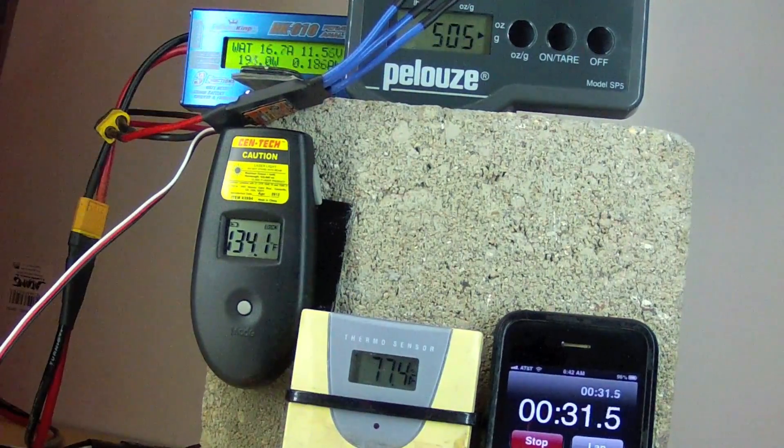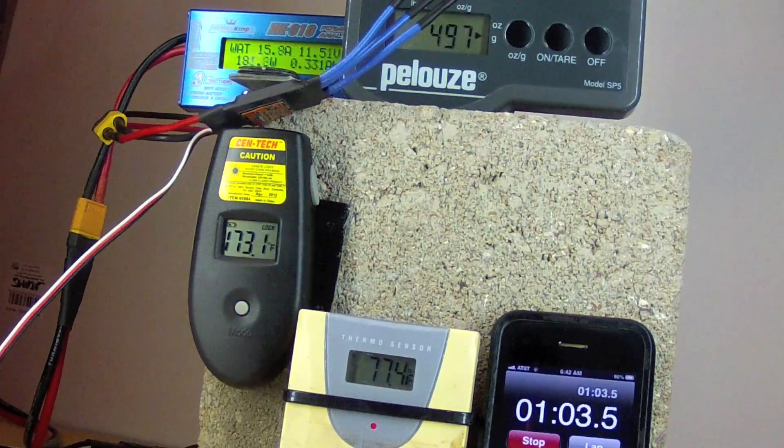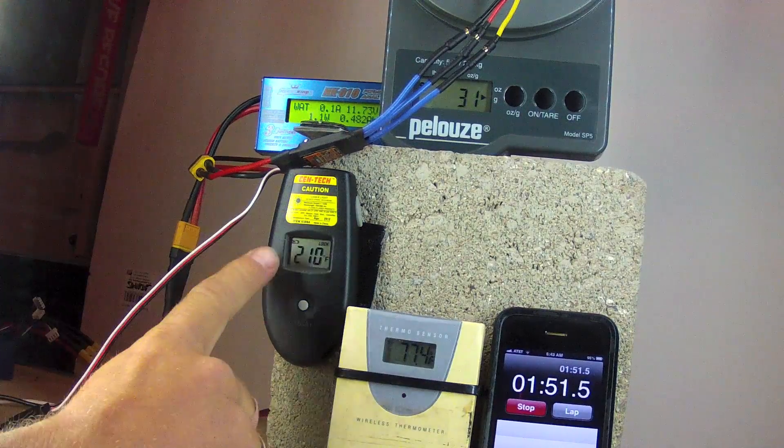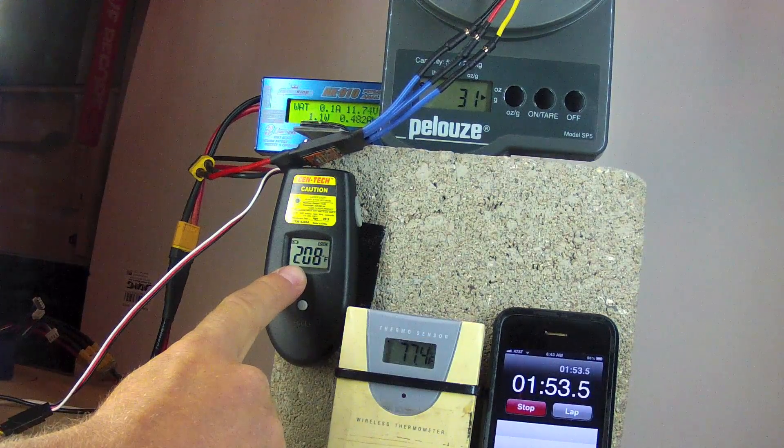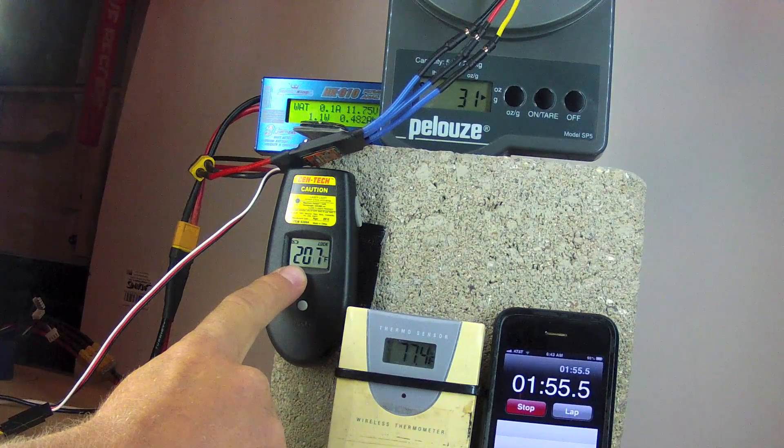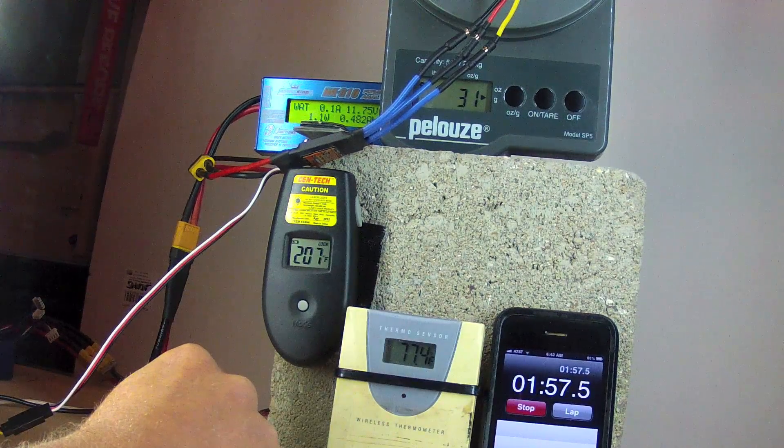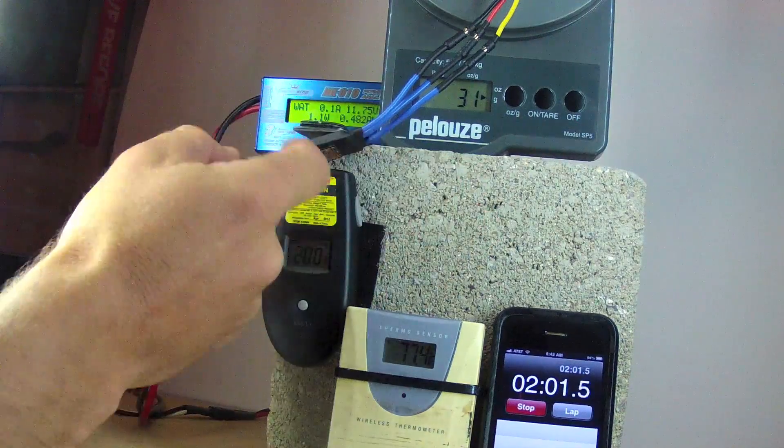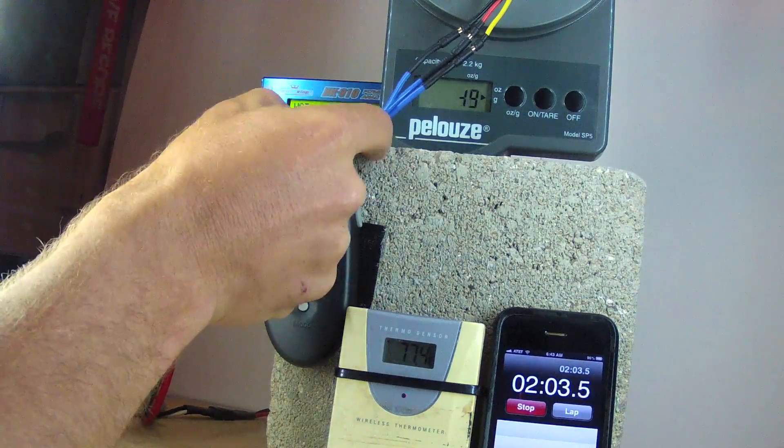Coming at about 15 amps this ESC heats up pretty quickly though. Note there's absolutely no cooling air. So I went ahead and stopped the test at 200 degrees Fahrenheit. Nearly hot enough to boil water. It was about 130 seconds. There was a little bit of wattage drop off as well. And this as you can imagine is extremely hot to touch. But it was still working.